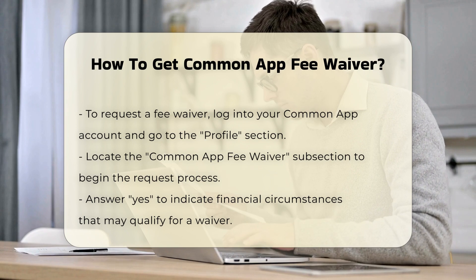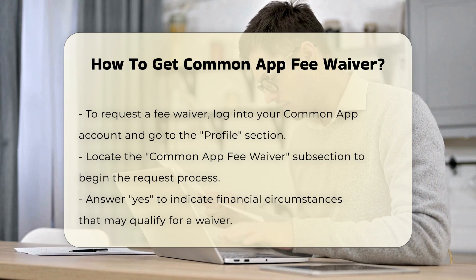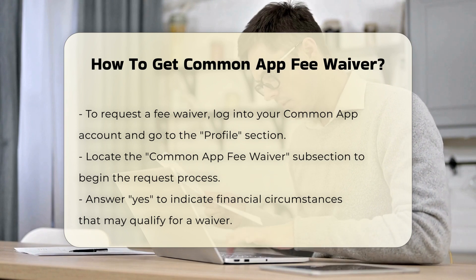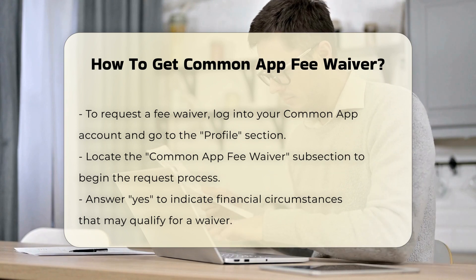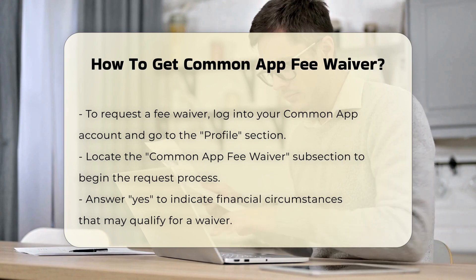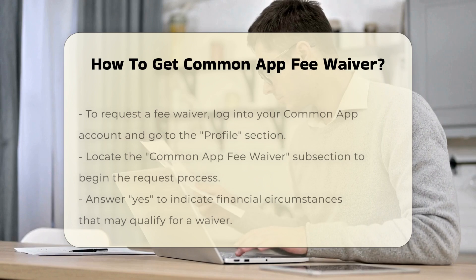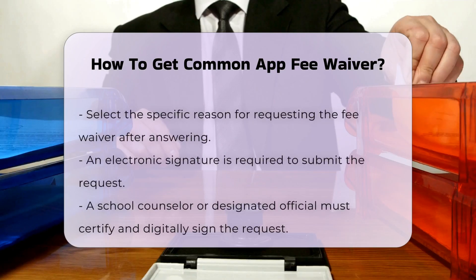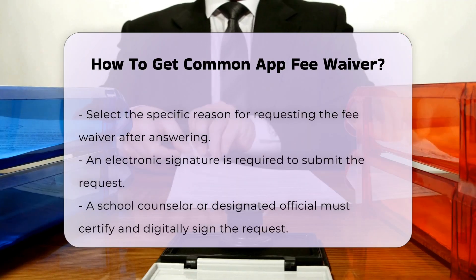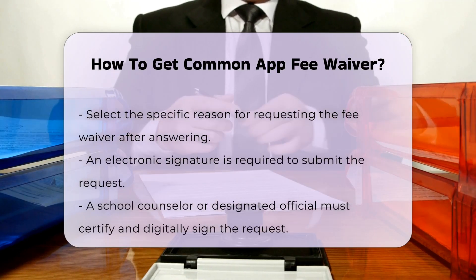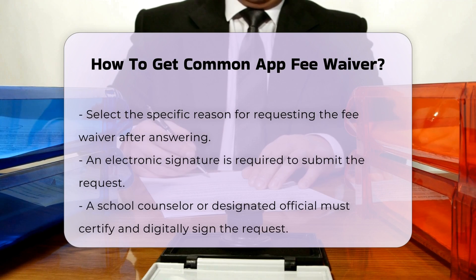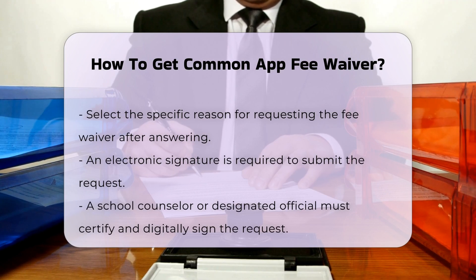Signing and Counselor Approval. After selecting your reason, you will electronically sign the request. Your school counselor or another designated school official will then receive your request and will need to certify and sign it digitally to confirm your eligibility.